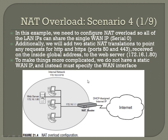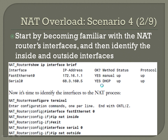Start by identifying the NAT interfaces with 'show IP interface brief'. You can see FastEthernet0 for the LAN block at 172.16.1.1, and Serial0 currently pulling a DHCP address of 68.3.160.5. Now label the interfaces: config T — interface FastEthernet0 — IP NAT inside — exit — interface Serial0 — IP NAT outside. Both interfaces are now labeled.